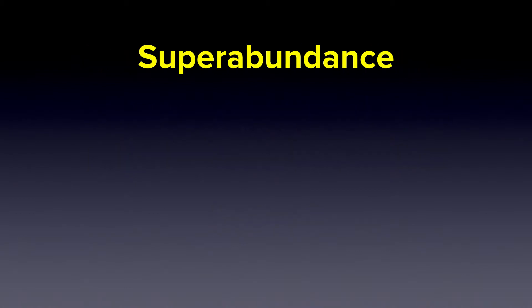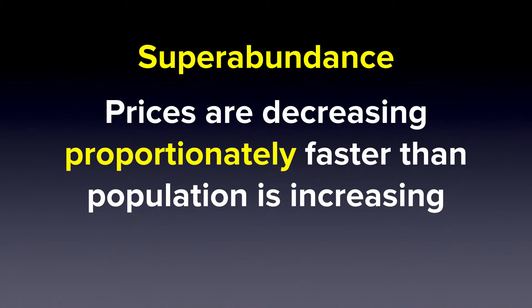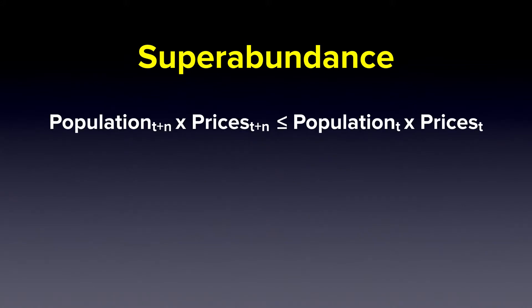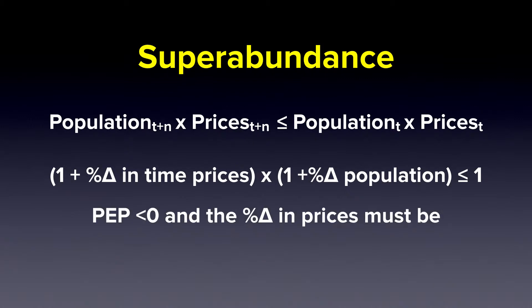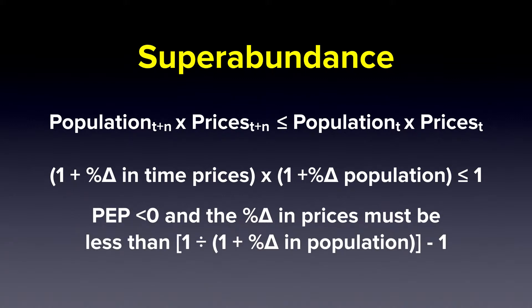Superabundance is a special zone where prices are decreasing proportionally faster than population is increasing. Superabundance has an equation that says population times prices today will actually be less than population times prices yesterday. There are also other equations that define this line and area, which you can find in more detail in the report.